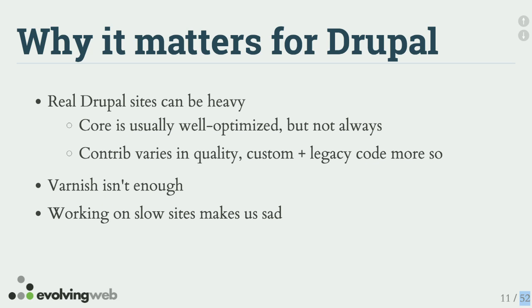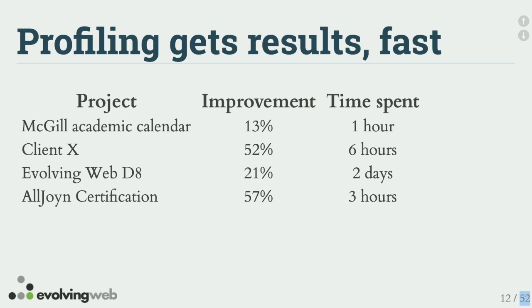A lot of performance problems with Drupal are often handled by sticking Varnish in front of it, which is great because Varnish is a super efficient cache. But it clearly works only for a section of your use cases. Most visitors will receive a fast page load except the ones that don't. When you have a high traffic site and somebody clicks edit on a node and saves, all of a sudden your homepage isn't loading anymore because all the caches just got expired — that's the cache stampede problem. It only works for anonymous users, not for anyone who's logged in. And on a personal level, as a developer, working on a slow site is demoralizing.